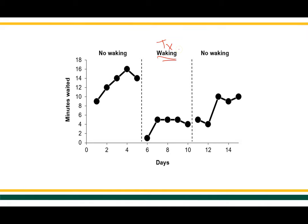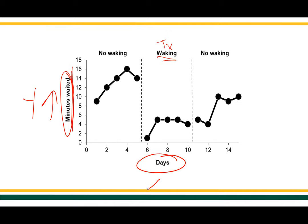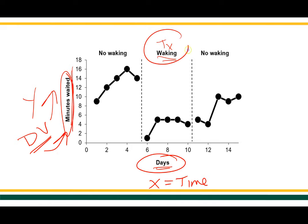On my y-axis — the left axis, remember that y is high — we have the behavior of interest: minutes waited. We're not sure exactly what the phenomenon of interest is or why they're measuring minutes waited, but this is the dependent measure. On the x-axis — the horizontal one — it typically refers to time or how often the data were collected, and in this case we see that days is how often data were collected. So my dependent variable is the number of minutes waited, and my independent variable or treatment is whatever waking is.